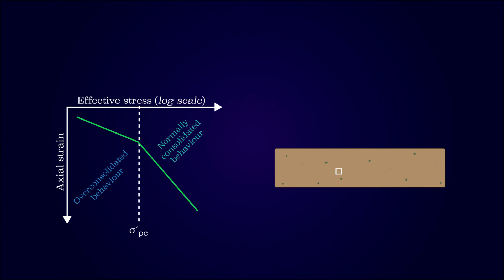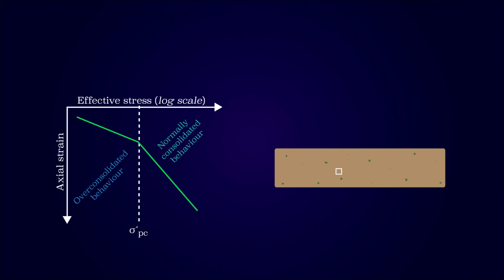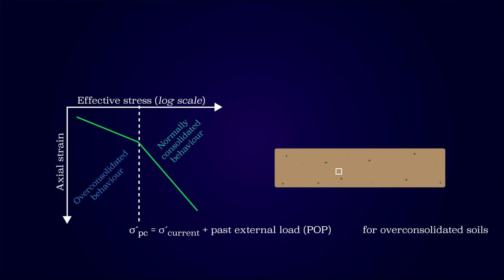Normally consolidated soils will show a pre-consolidation stress equal to the overburden pressure, while the pre-overburden pressure is zero. Overconsolidated soils will show a pre-consolidation stress equal to the overburden pressure plus the maximum external load.